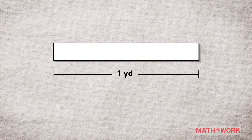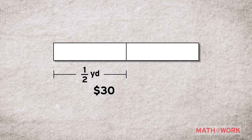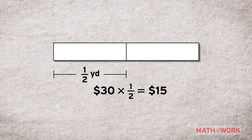First, let's see if you'll have enough money in your budget to buy half a yard of the lace, which is more expensive. The lace costs $30 per yard, so half a yard of the lace costs $30 times one half. That's $15. Jessalyn, that means you're going to spend $15 on the lace.